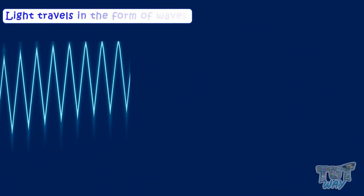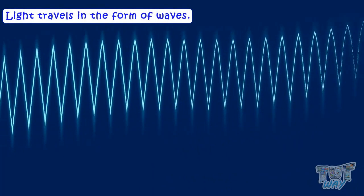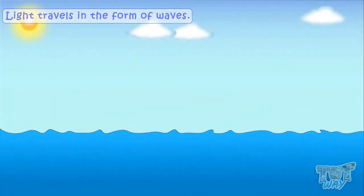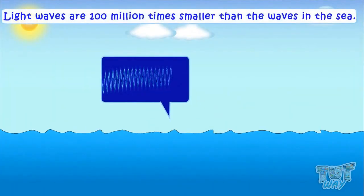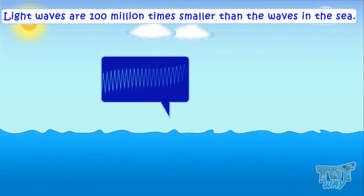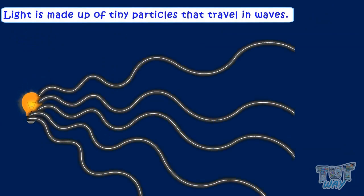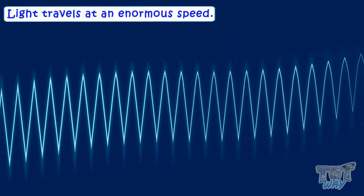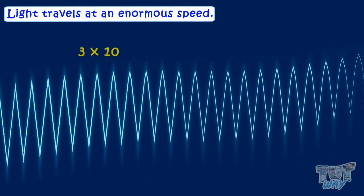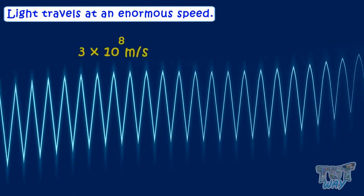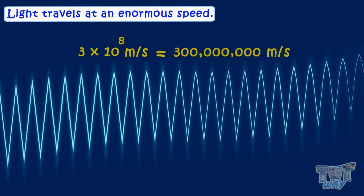Energy travels in the form of waves, similar to the waves in the sea, but they are 100 million times smaller than the waves in the sea, and light is made up of tiny particles that travel in waves. Light travels at an enormous speed — we express it as 3 × 10⁸ meters per second, which is approximately 300 million meters per second.